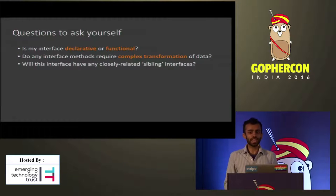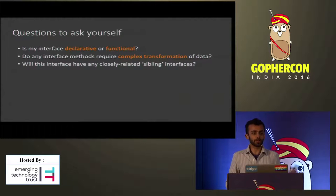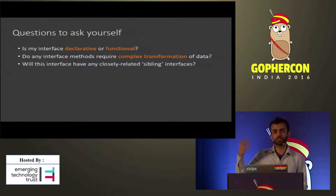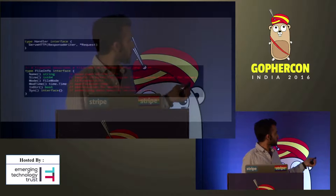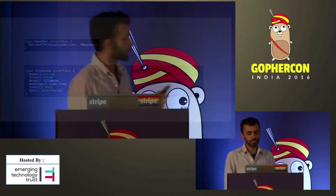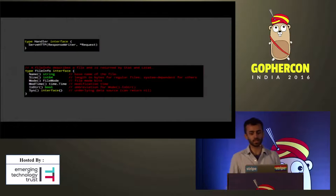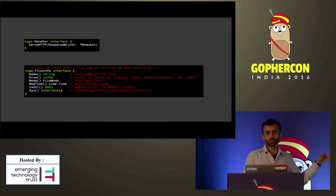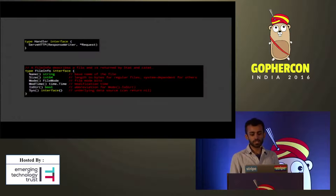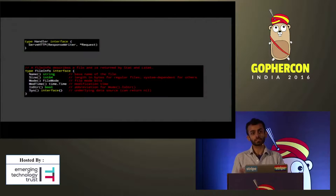Additionally, will this interface need any closely related sibling or cousin interfaces the way the IO interfaces do, or is it more standalone like the error interface? I'd encourage you to look in particular at the Handler interface and the FileInfo interface. Handler, in particular, is a work of art — possibly my favorite interface in the entire standard library. Each of these interfaces draws from both the IO interfaces and the error interface, and it's worthwhile seeing how they mix those characteristics and why that makes them powerful.